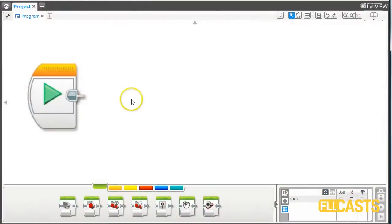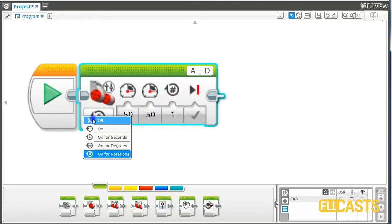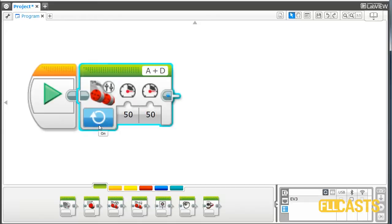First, we need a block that moves the robot forward. We'll use again the tank block and we're moving motors A and D. So move forward, motor A and D. And we don't want to move for one rotation. We just want to move forward until we detect a line. How do we detect a line?